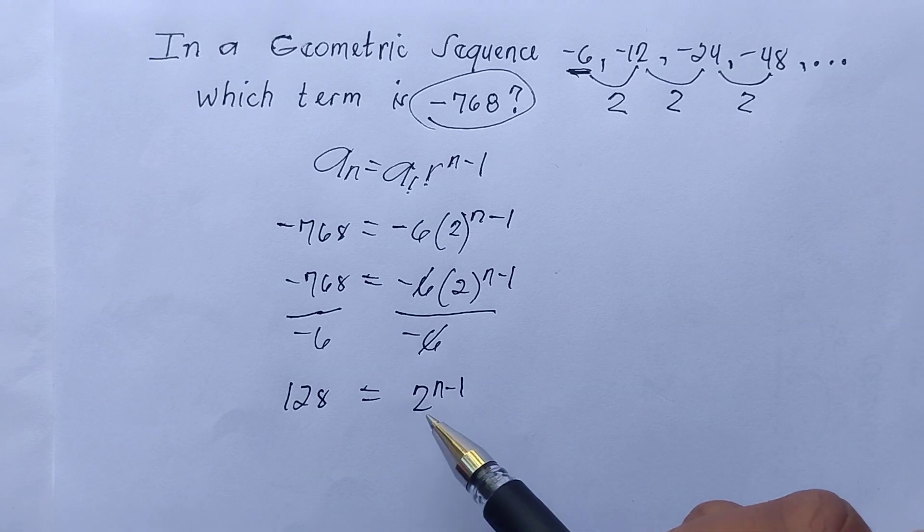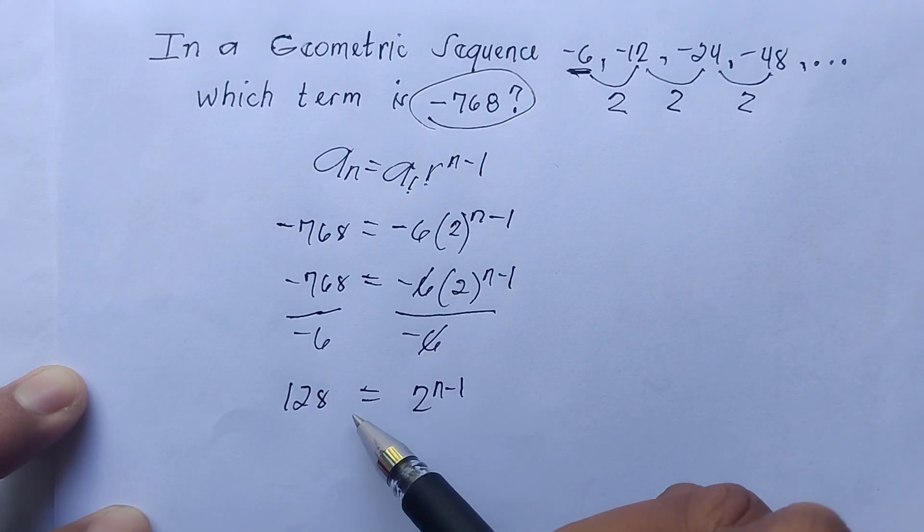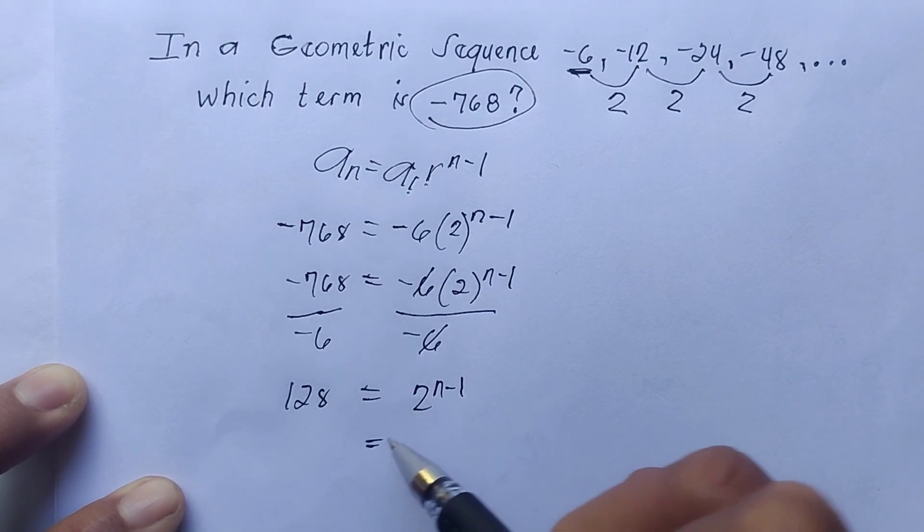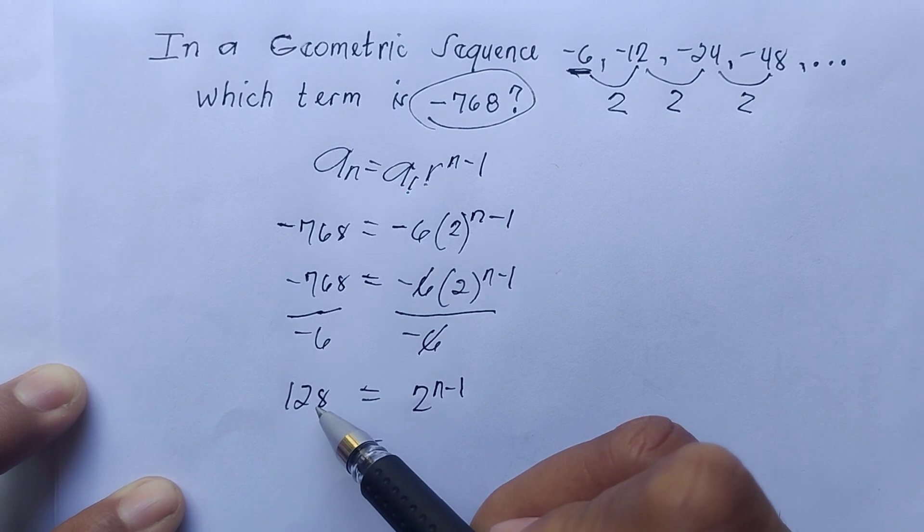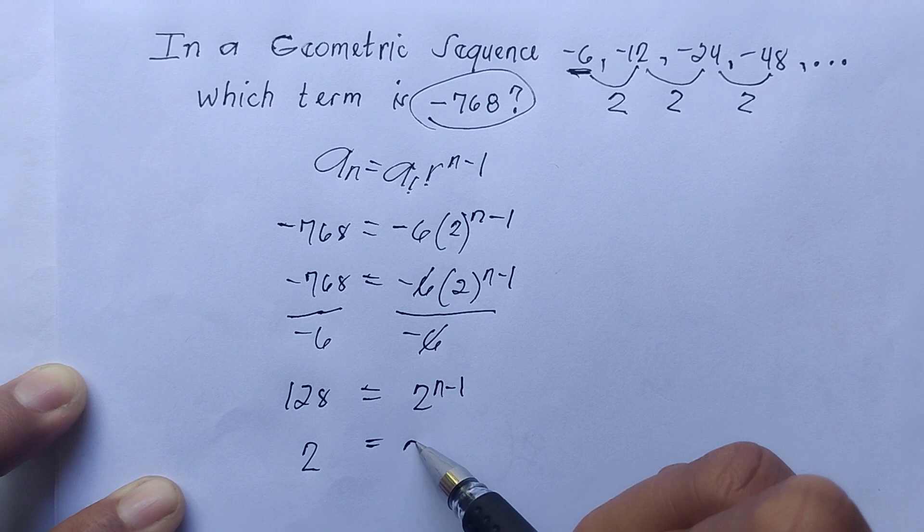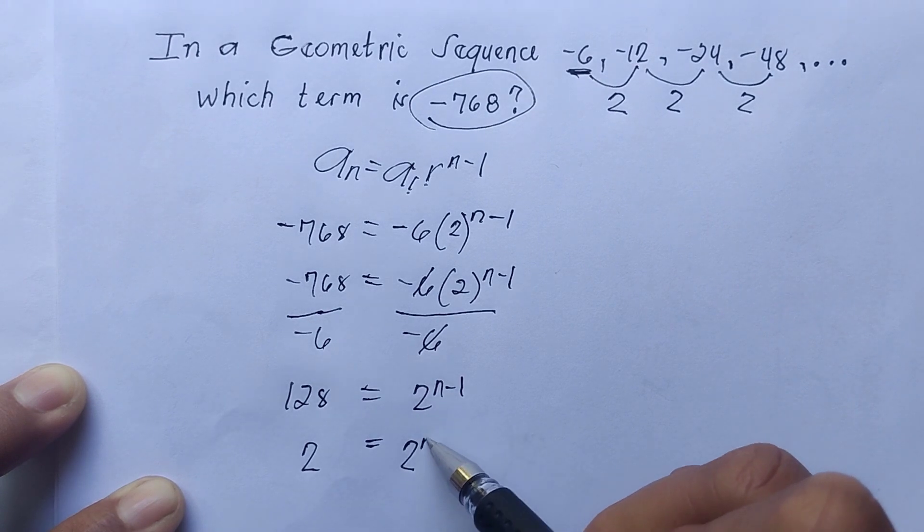Here we have the exponential form, and on the left side we have the whole number or the base. We need to transform 128 into exponential form where the base is 2, so that they would be equal here.